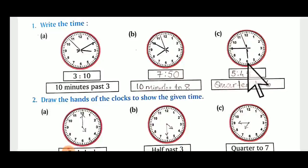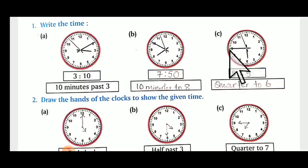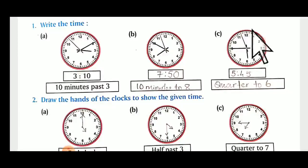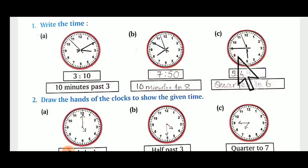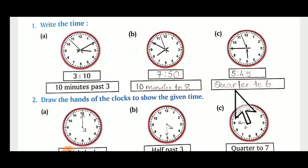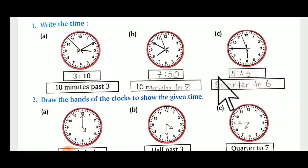Then the smaller hand is towards six — near about to six — and the minutes hand is towards nine, and the seconds hand is after five, towards six and seven. So fifteen minutes are remaining to be six o'clock. Five forty-five we are going to write as quarter to six. Quarter means fifteen minutes are remaining to be six o'clock.